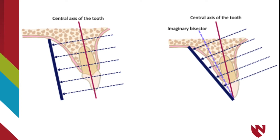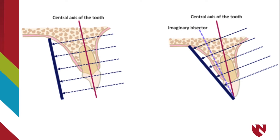If paralleling technique cannot be used due to a narrow palate or other interference, then you would use a technique called bisecting angle. Bisecting angle technique is when the central ray is directly perpendicular to the imaginary plane that bisects the angle between the sensor and the root of the tooth.